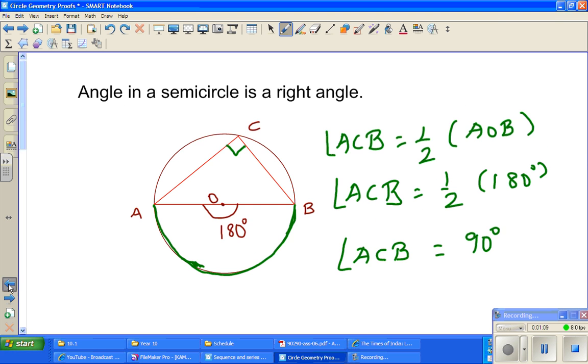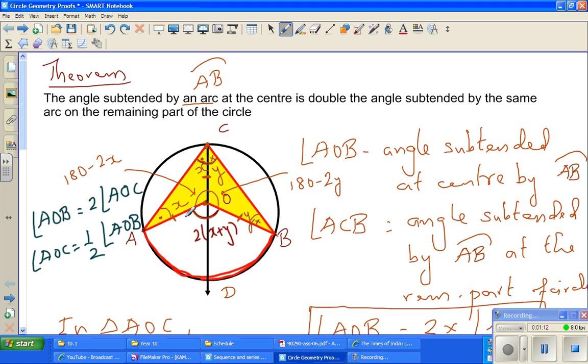Now, this is based on the first result. We proved that angle AOB at the center is twice angle ACB. AOB is twice ACB, or ACB is half of AOB. They are one and the same result.